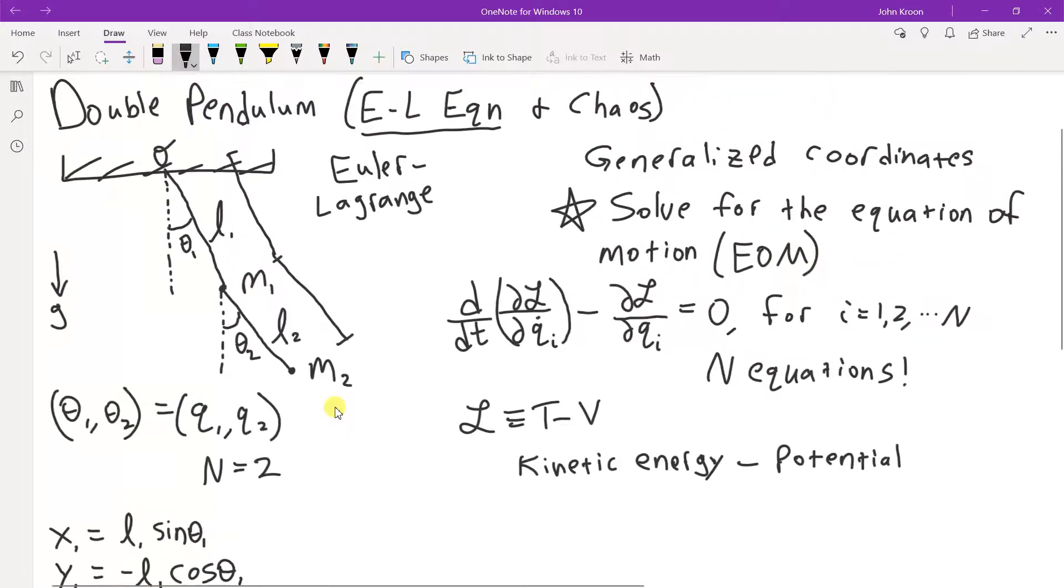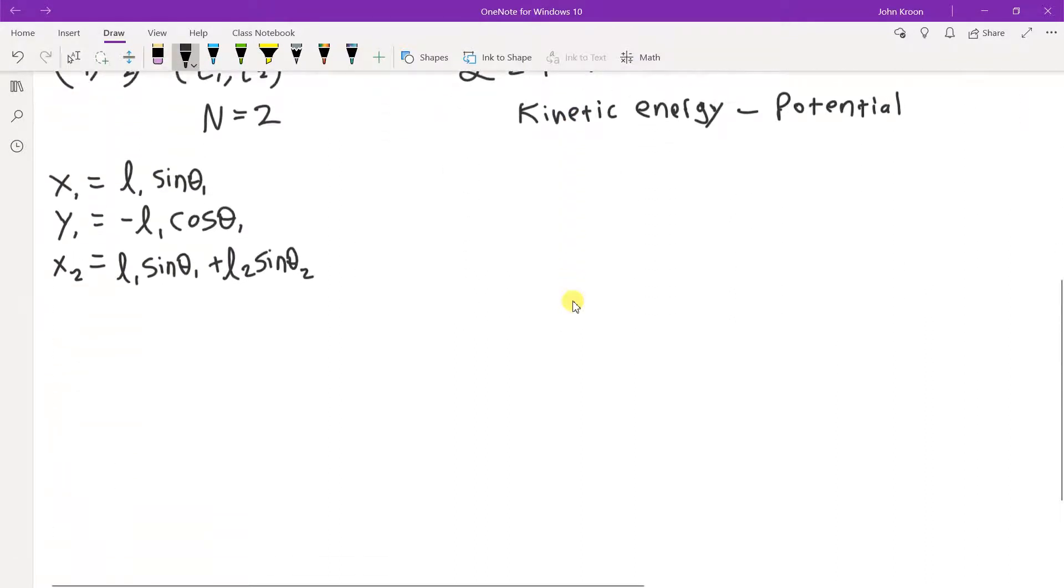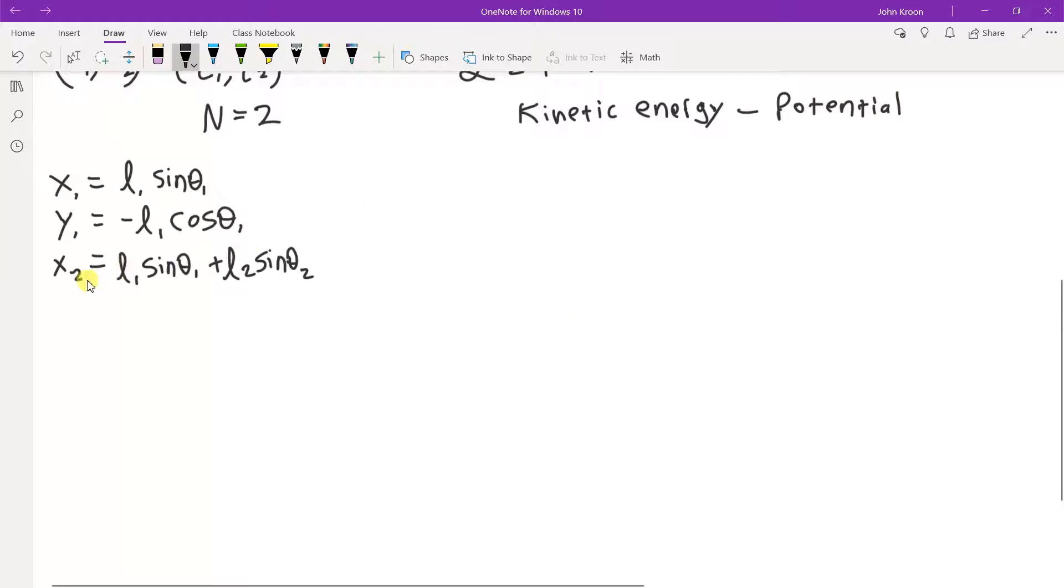So remember to get to the second mass you would first start at the origin and then go down to the first mass along some theta 1 and l1 and then down to the second mass and there you go you're home. So the second mass sort of depends implicitly or indirectly I guess on the first one because they're attached. And so for y2 we have minus l1 cosine theta 1 minus l2 cosine theta 2.